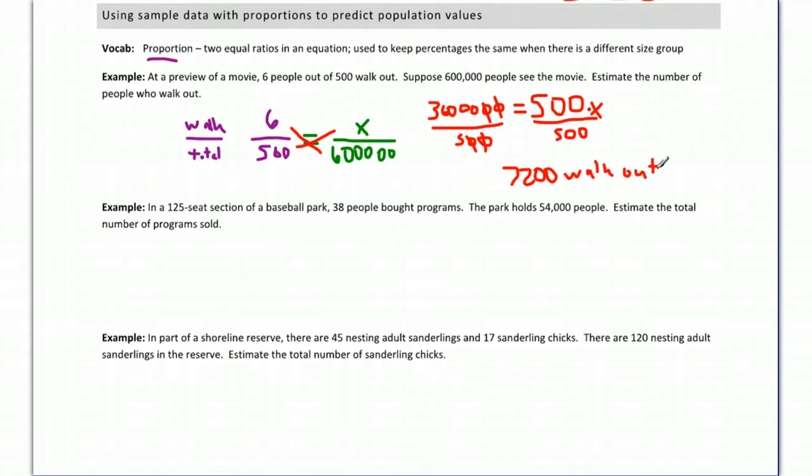Now we're just going to carry on the same idea to a couple more examples. In a 125-seat section of a baseball park, 38 people bought programs. So total people over number who buy. So we put the number of people who buy, 38, over the number of total people, 125.